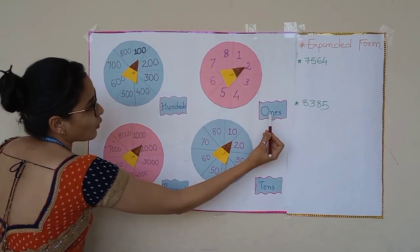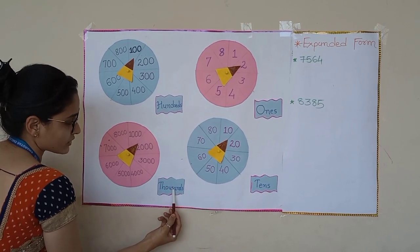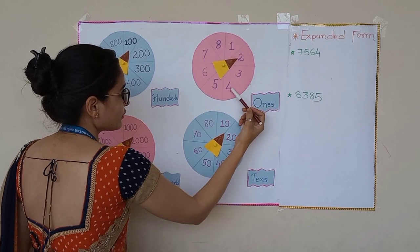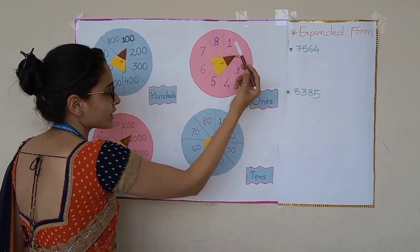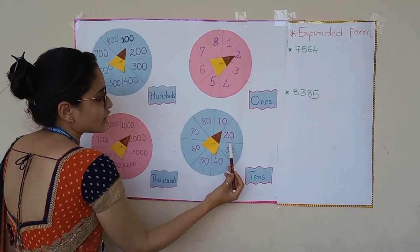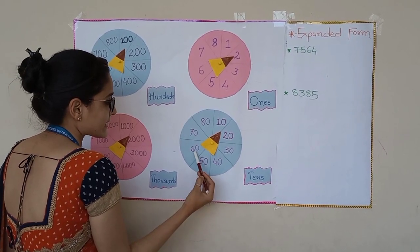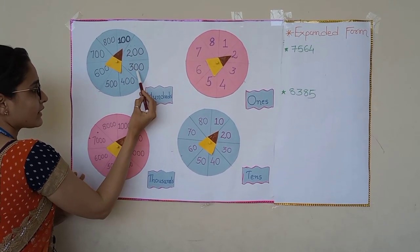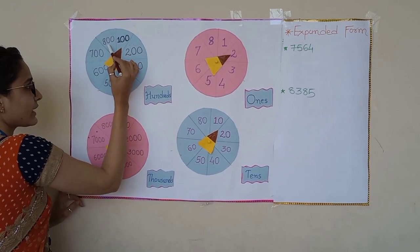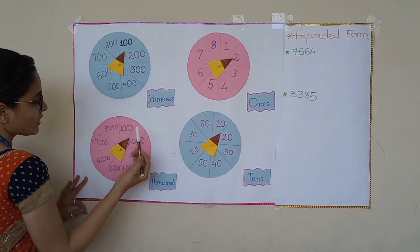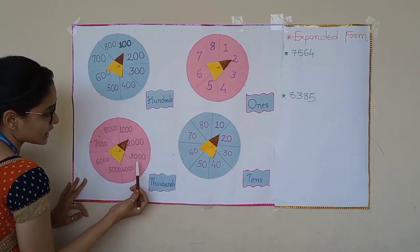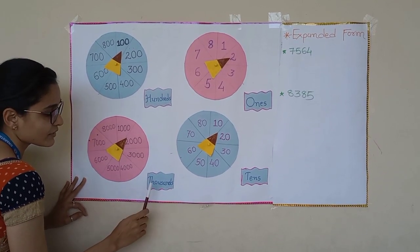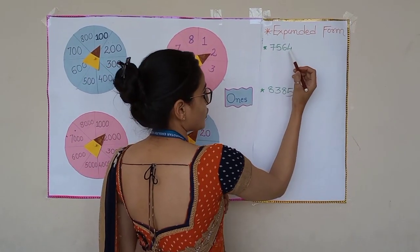As you can see, I have pasted four discs: ones, tens, hundreds, and thousands. In every disc I have written one to eight digits — 1, 2, 3, 4, 5, 6, 7, 8. This is the disc of ones. Next: 10, 20, 30, 40, 50, 60, 70, 80 — this is the disc of tens. Next: 100, 200, 300, 400, 500, 600, 700, 800 — this is the disc of hundreds. And this is the disc of thousands.